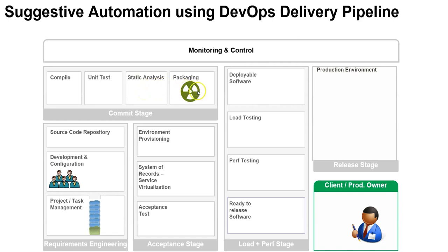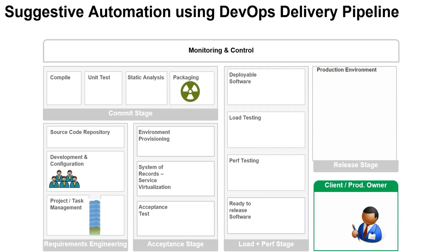From packaging it goes to environment provisioning — we provision the servers, containers, or VMs needed. Then system of records and service virtualization. Then acceptance testing — whether the product is working correctly. Once it passes, deployable software is created, which can be given to the client or deployed for testing. Here we do functional testing on the deployable software, load testing to determine resource requirements, and performance testing to assess behavior over time.